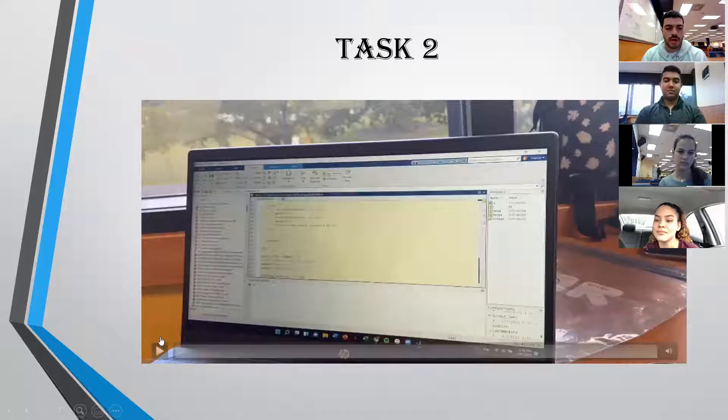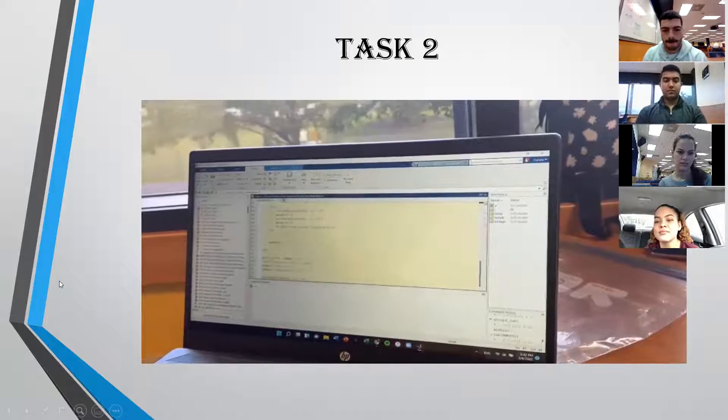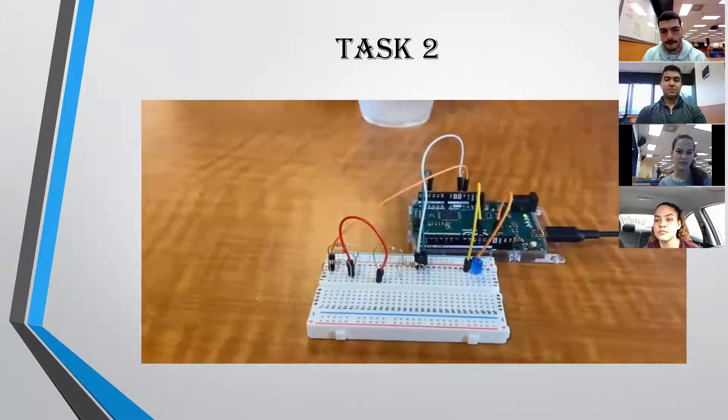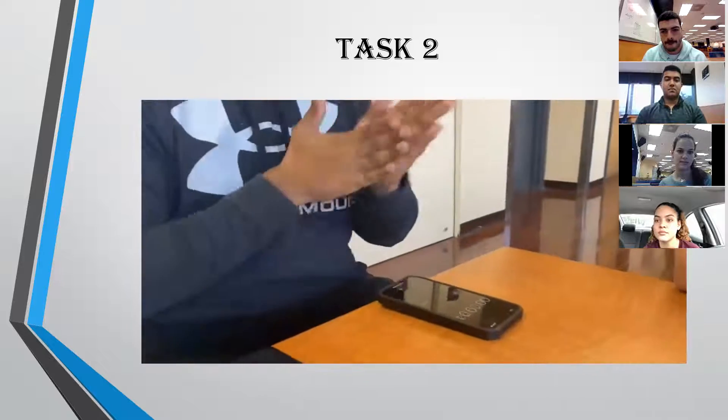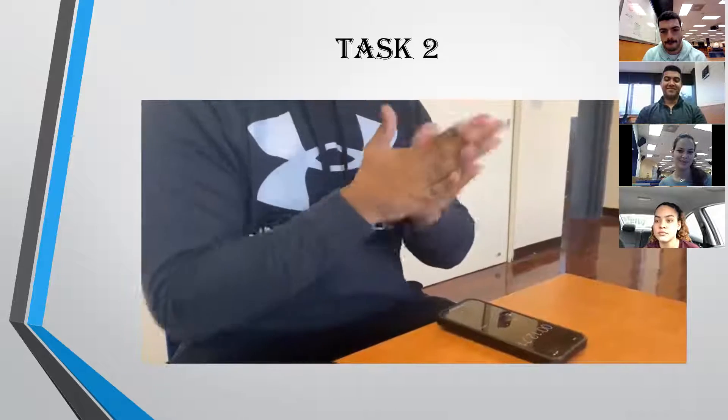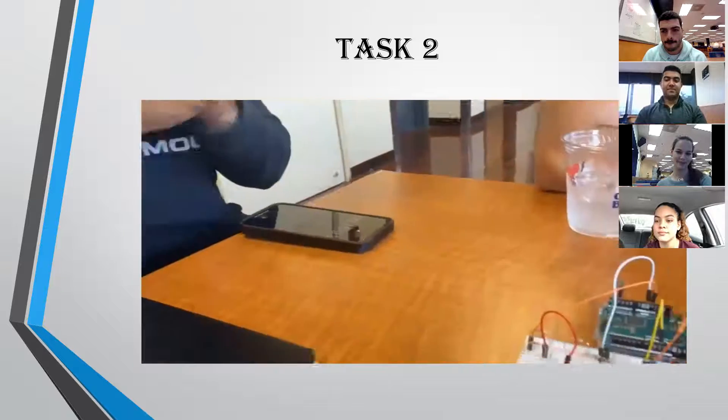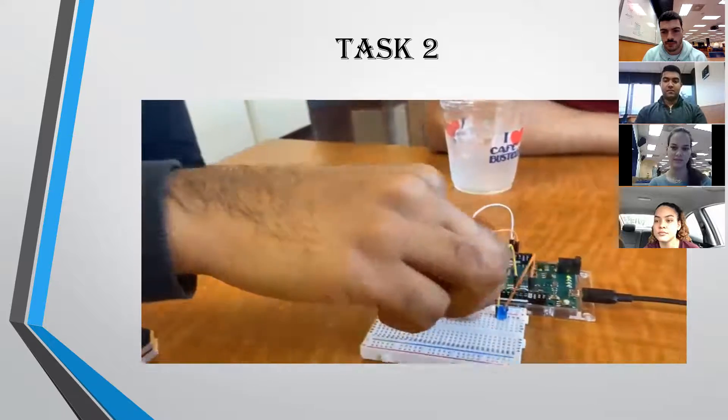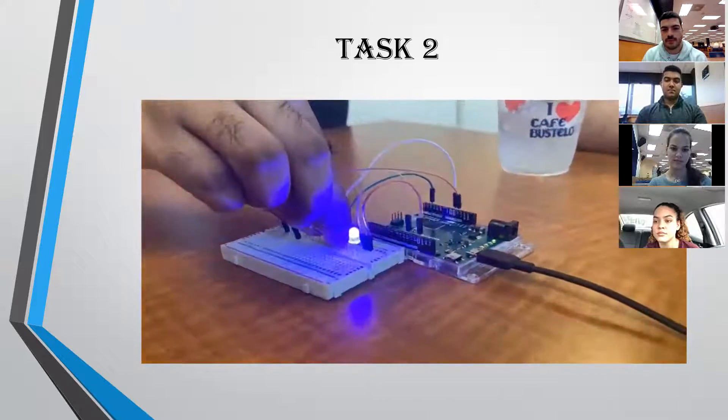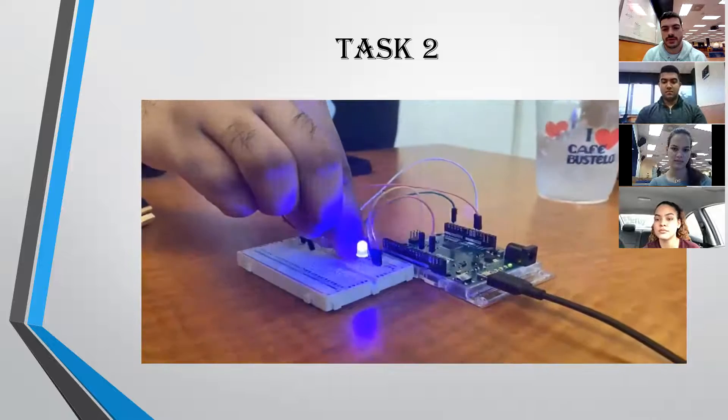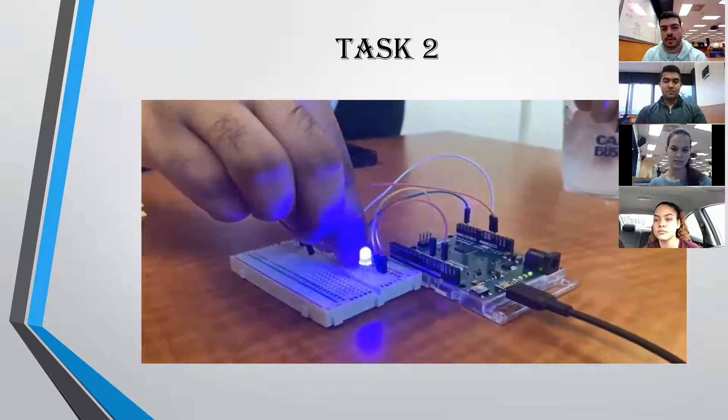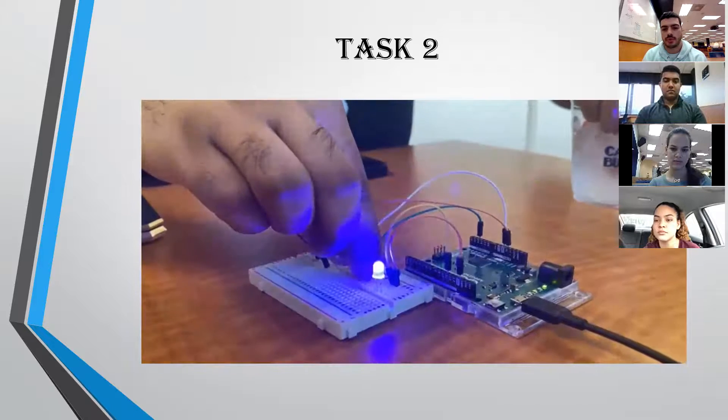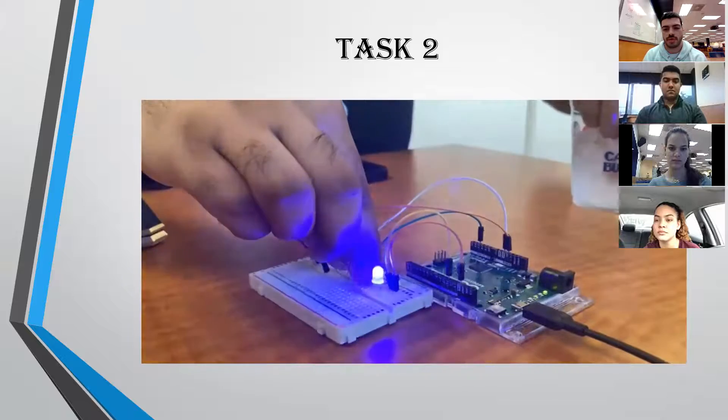I'm going to play the video for the second task. As you can see, the warm temperature on Paul's hands is inputted to the sensor. The light blinks. That's what we set it up to do when it has warm temperature on.